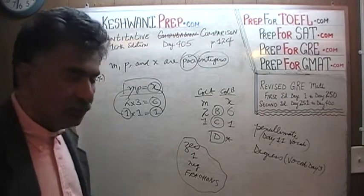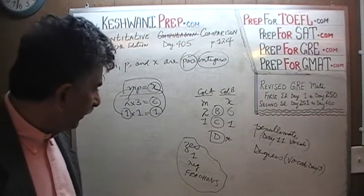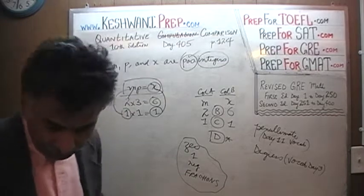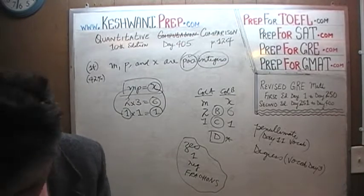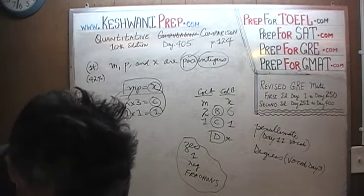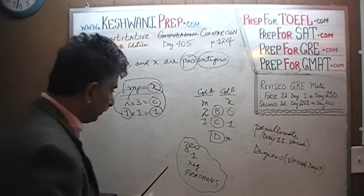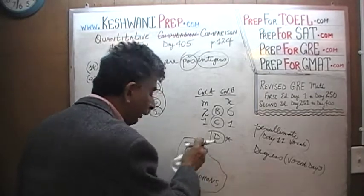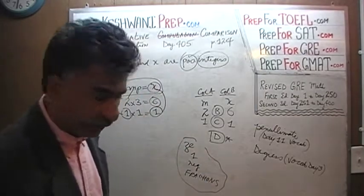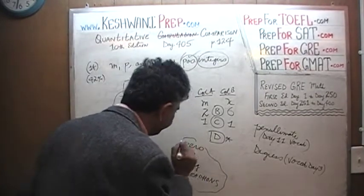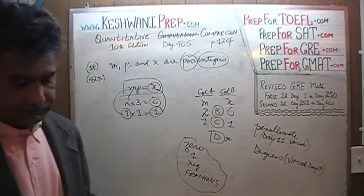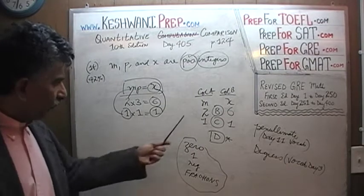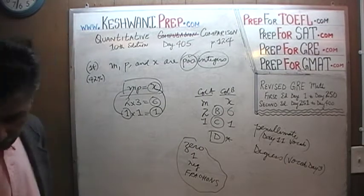Nastiest of all is 0 — you must always contemplate 0, 1, negatives, and fractions. So 1 is what is giving trouble here. Let's do the very last one.